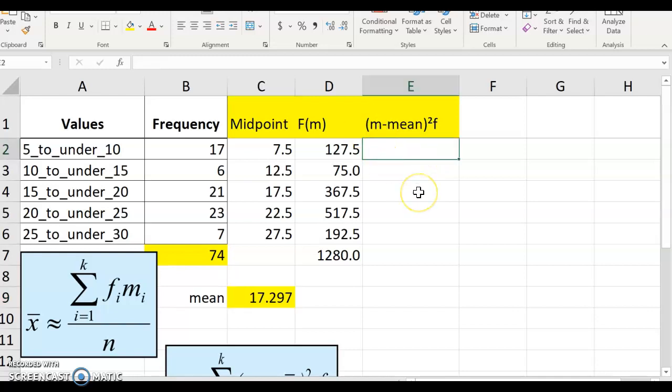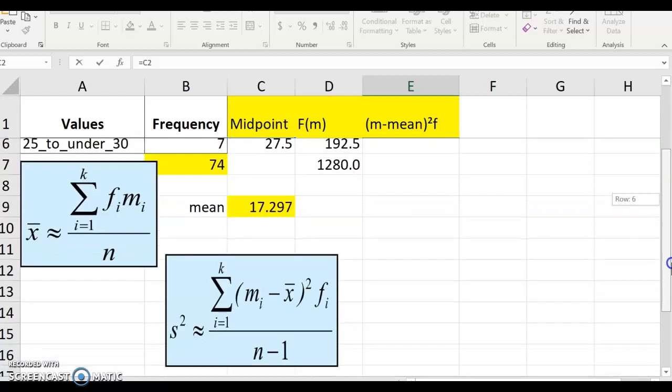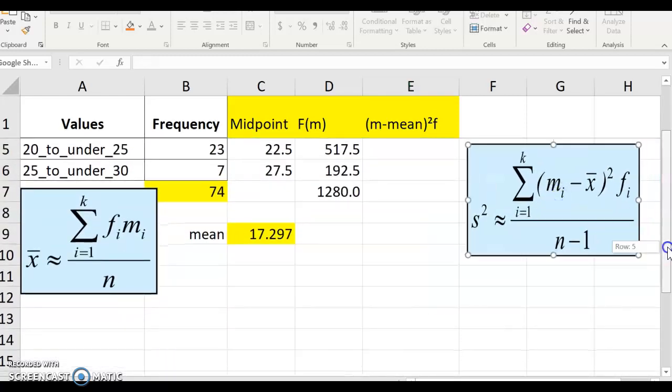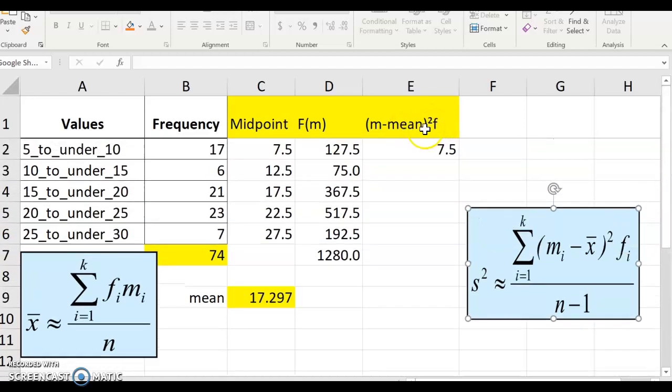So for this one, I'm going to do my midpoint. I'm working on my standard deviation, which is this formula down here. Let me put it over here so we can see it. I've already labeled this up here, but we're going to do our midpoint minus our mean. And I'm just going to type in the number for the mean, so it will use that each time.